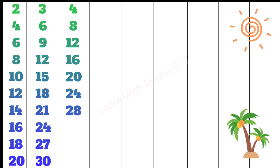4 7s are 28, 4 8s are 32, 4 9s are 36, 4 10s are 40.